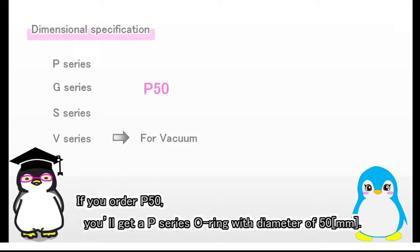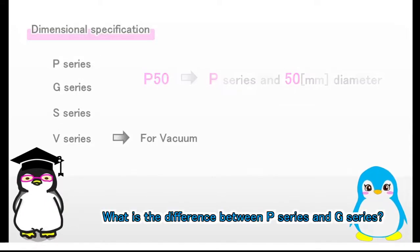If you order P50, you'll get a P-series O-ring with diameter of 50mm. What is the difference between P-series and G-series?